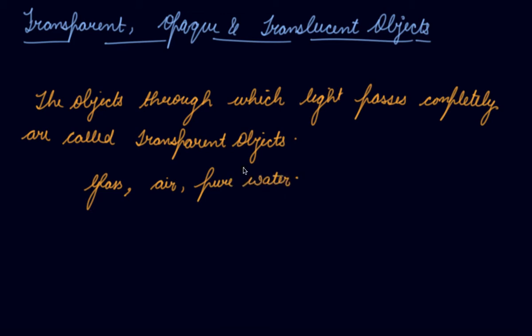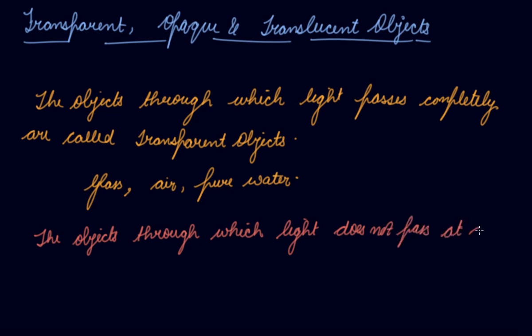are called transparent objects like your glass. If I talk about your air, pure water, through which you can see inside it or you can see outside it, all these objects are transparent objects. Opaque objects: the objects through which light does not pass at all